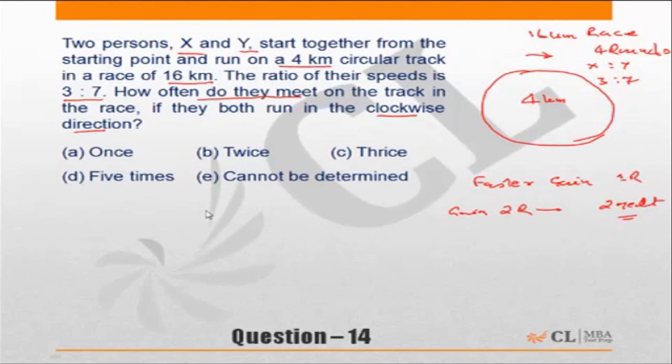The ratio of speeds being 3 to 7 means when X does 3 rounds, Y will do 7 rounds. Or I can say the gain of Y over X will be 4 rounds. So when Y does 7 rounds, he gains 4 rounds over X. But how many rounds will